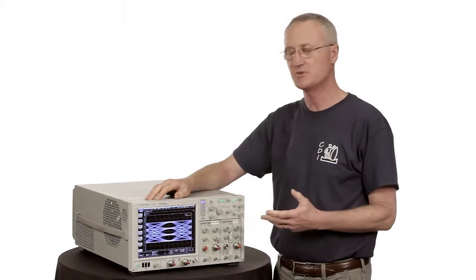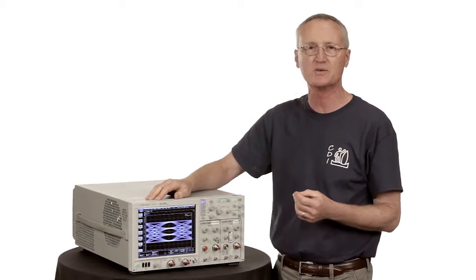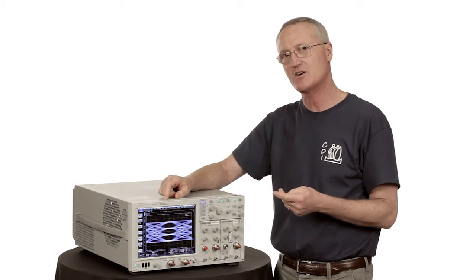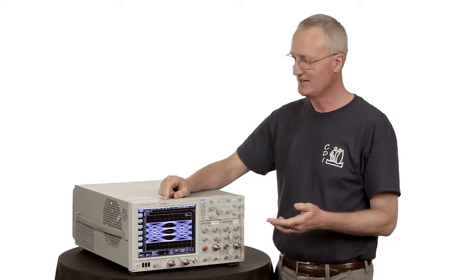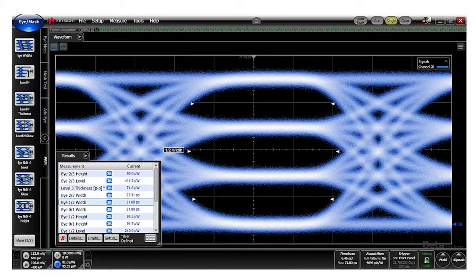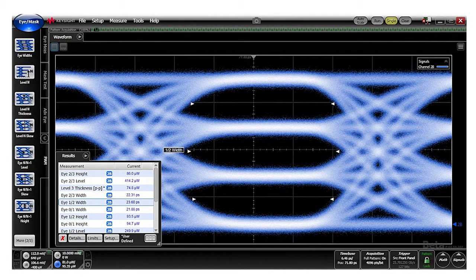Many of the PAM-4 measurements that are made on that eye diagram are similar to what was done on the NRZ eye. Things like eye width, eye height, except that if you notice here, instead of an eye width, there are three eye widths. There are three eye heights. So when you press the eye width measurement, it reports three values.